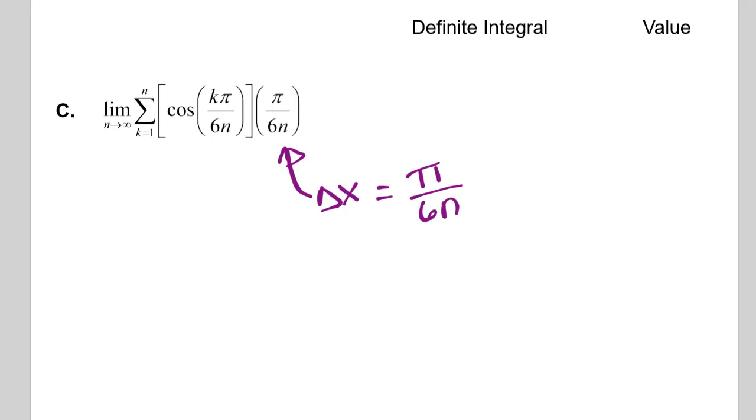Then we want to identify our function. Okay. So our function f of x is equal to cosine x. Okay. So we need to know what those x's are.